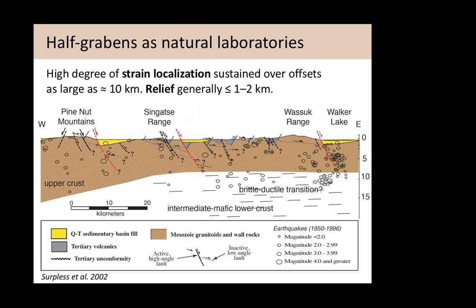I want to focus not on convergent boundaries but on rifts and half-grabens in particular, viewing them as natural laboratories to study strain localization in relation to broader upper crust deformation. This is a large-scale cross-section through a section of the Basin and Range in Nevada. The upper crust is about 12 kilometers thick, as indicated by the maximum depth of earthquakes. Although this is a diffuse, very wide rift, much of the tectonic action happens on two major master faults that form half-graben structures. Most of the topographic and structural relief happen through a high degree of strain localization in extension.